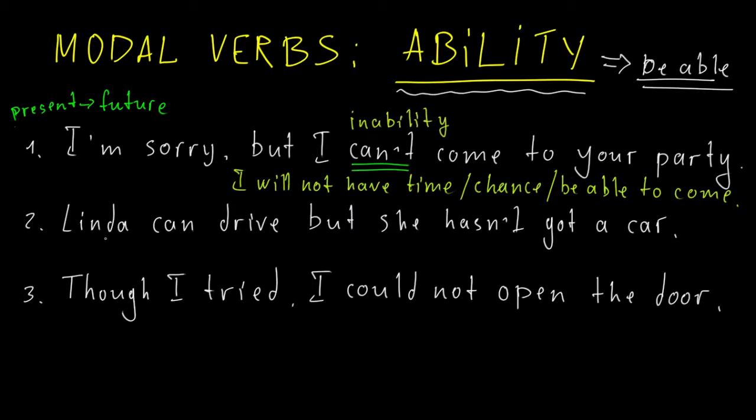What about number two. Linda can drive, but she hasn't got a car. So here she has some skills. She can drive because she is a driver, or she has a license, or she just has necessary skills. In other words, she is able to drive. Here we talk about present again.